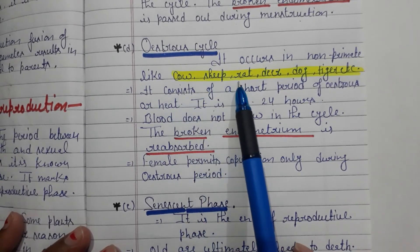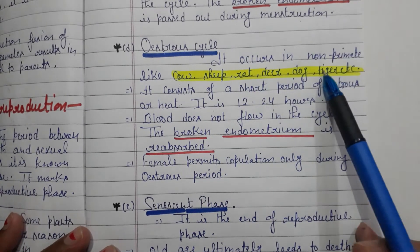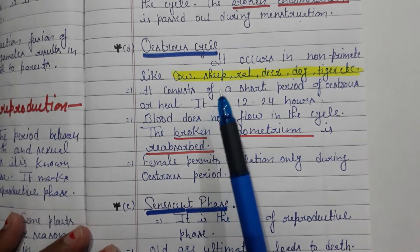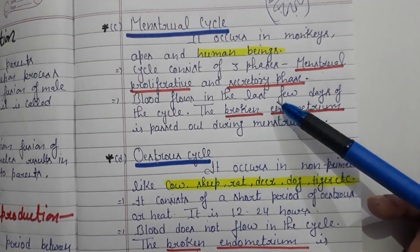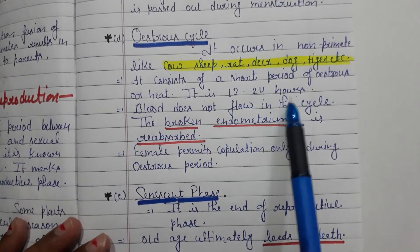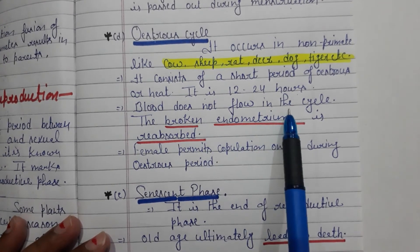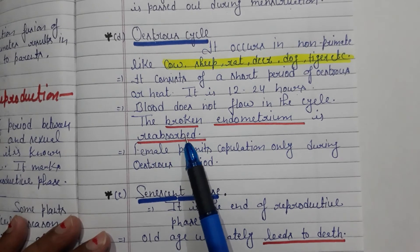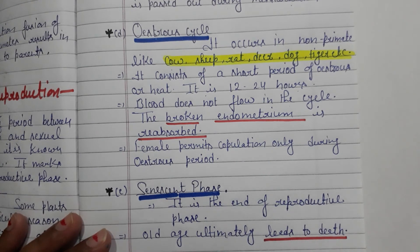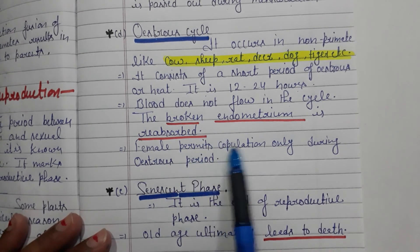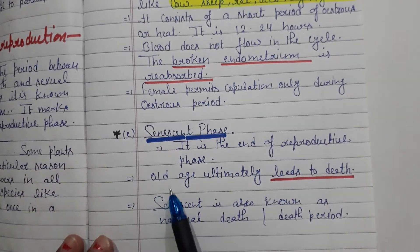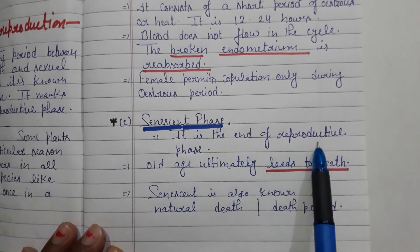The next is the estrous cycle. The estrous cycle is seen in non-primate mammals — cow, sheep, dog, tiger. Unlike the menstrual cycle, this does not involve blood flow. The endometrium is reabsorbed rather than shed. The female is receptive to mating only during the estrous cycle period.